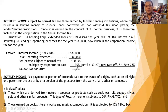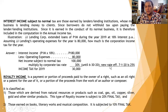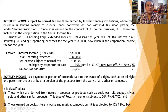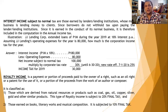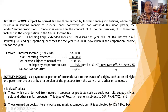This corporate income tax rate of 30% is good until June 30, 2020. Effective July 1, 2020, the new corporate rate is 25%, as promulgated under the CREATE provisions — the second batch of the TRAIN law.